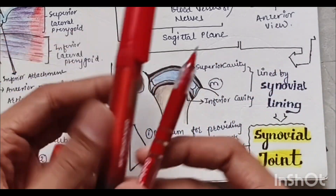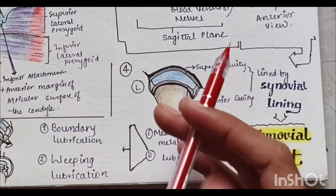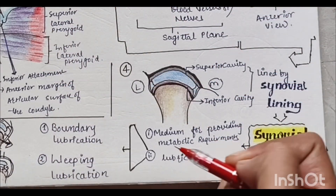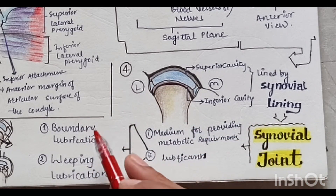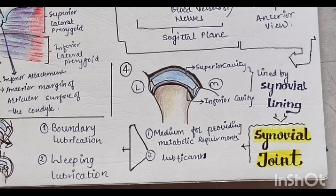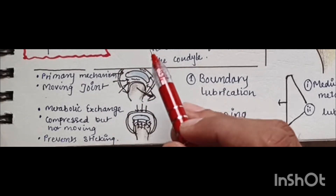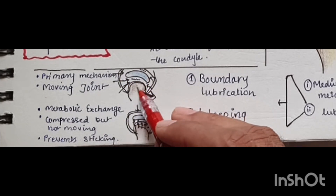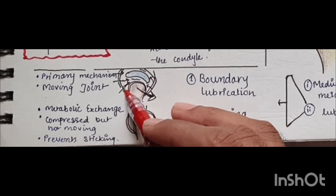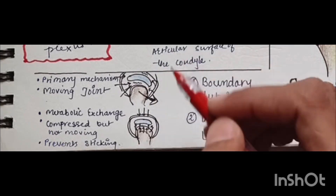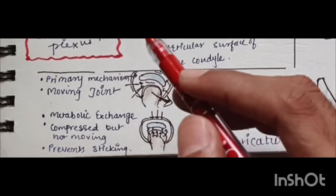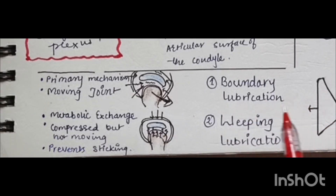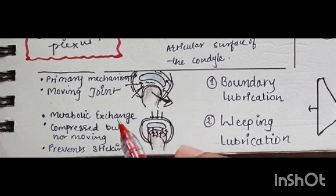Since the TMJ is constantly moving with opening and closing, lubrication is needed to prevent friction between the surfaces. There are two mechanisms of lubrication: boundary lubrication and weeping lubrication. Boundary lubrication is the primary mechanism and acts in a moving joint — when the condyle is moving anteriorly, fluids at the boundaries move toward the joint. Weeping lubrication acts when the joint is not moving.